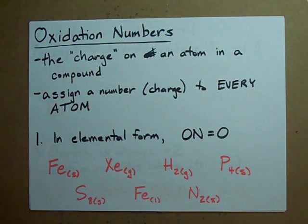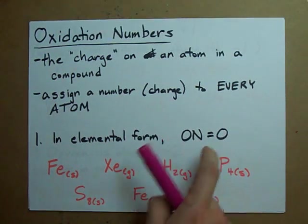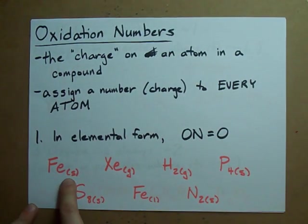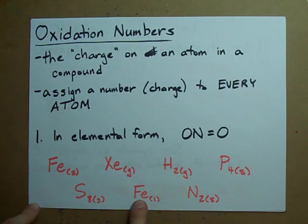Step one: if it's a pure element, just the element itself, it's got an oxidation number of zero. Metallic iron, gaseous xenon, hydrogen, liquid iron still an element, solid nitrogen still just the element nitrogen.